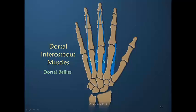The dorsal bellies of the dorsal interosseous muscles have influence over the dorsal apparatus, particularly of the long and ring fingers, influencing the transverse and oblique fibers as well as the entire apparatus itself.